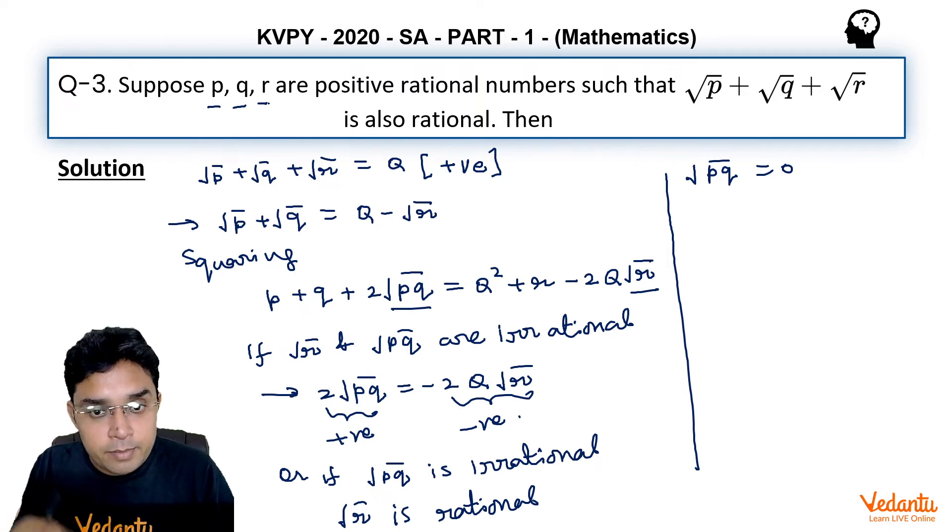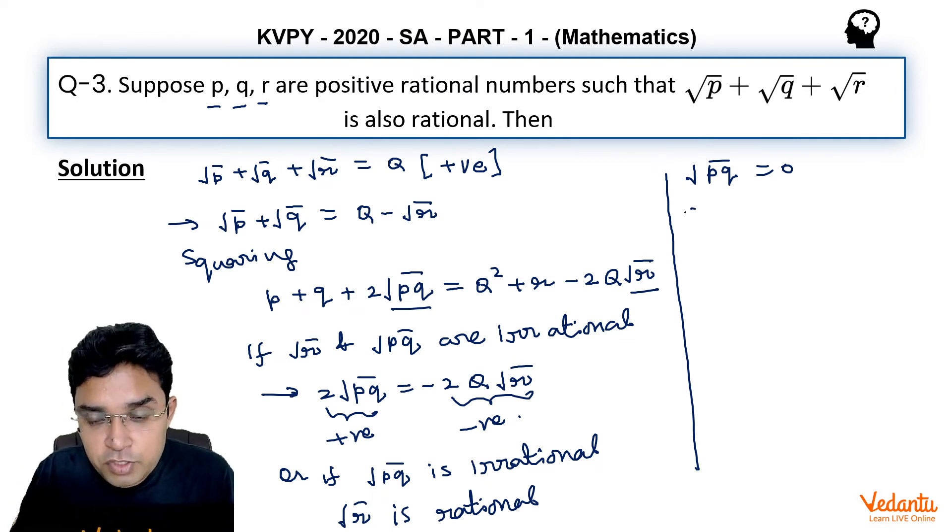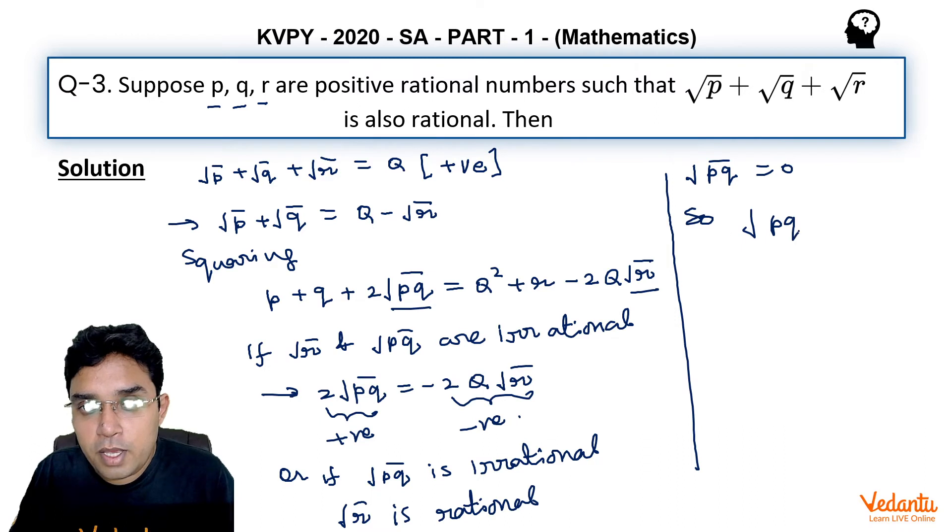Similarly, we can prove that the other assumption—√pq being rational and √r being irrational—is also not possible. Which means we can say that √pq as well as √r should both be rational numbers.